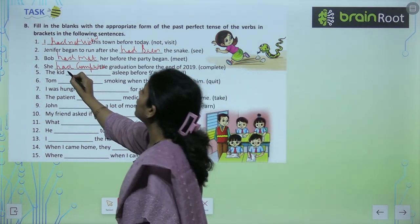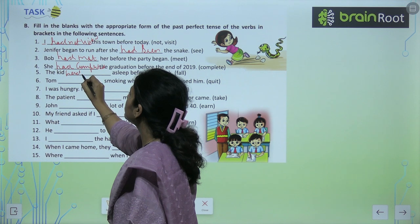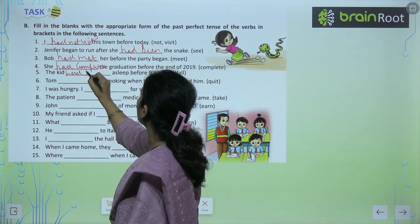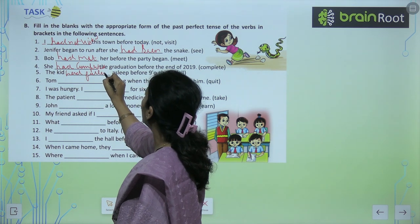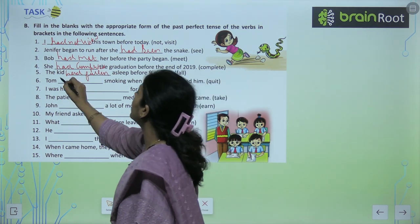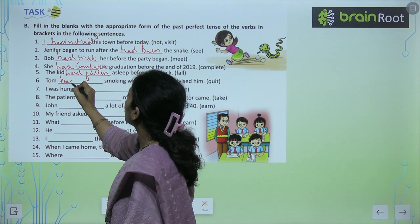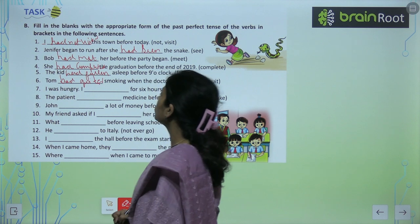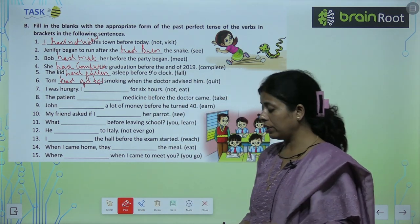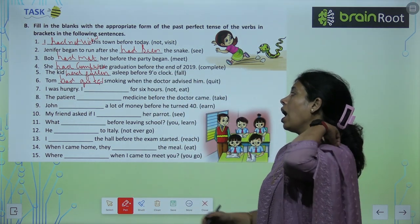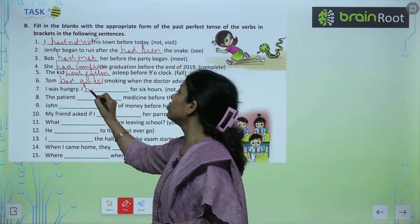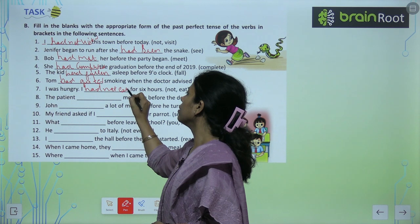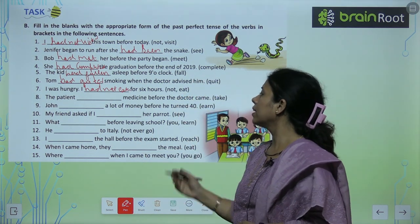The kid had fallen. Tom had quit smoking. I was hungry — I had not eaten for six hours. Subject ke saath had aayega plus third form of verb.